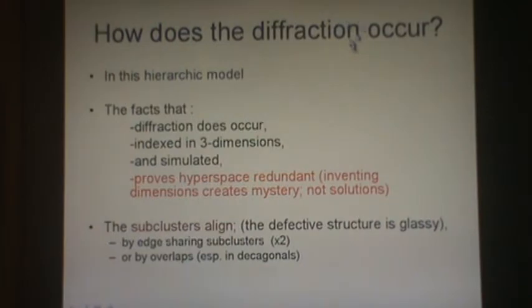So how does the diffraction occur? The fact that diffraction does occur, that it's indexed in three dimensions and simulated, says something about hyperspace. Well, where is hyperspace? It's in its own idiosyncratic hyperspace all alone. It's not needed, but what is important is that the sub-clusters align. And they align by three mechanisms, which we're going to show next.